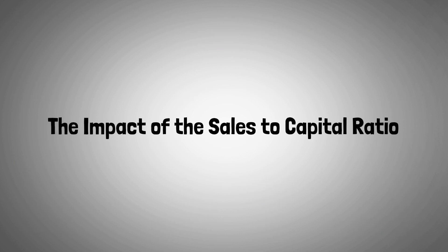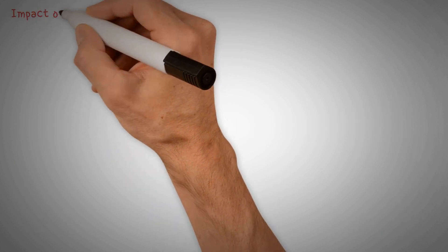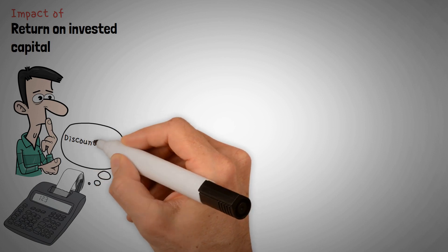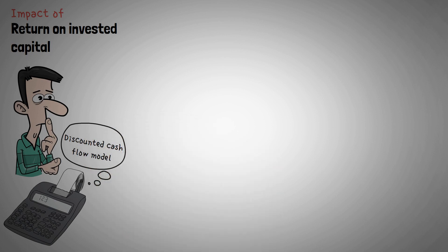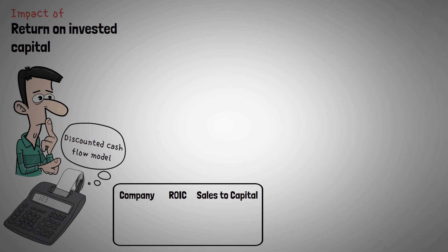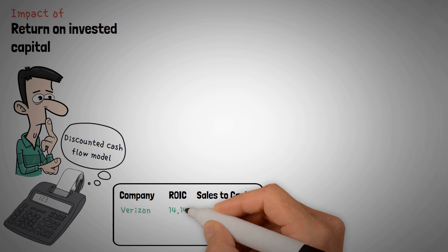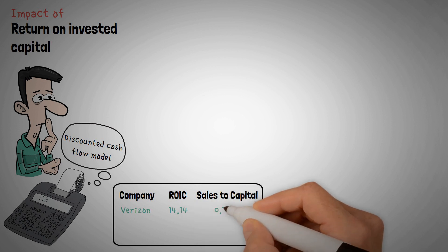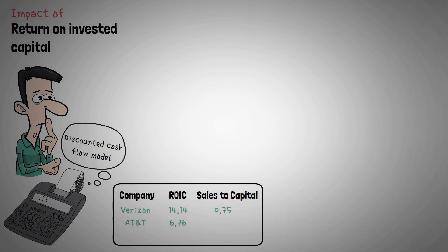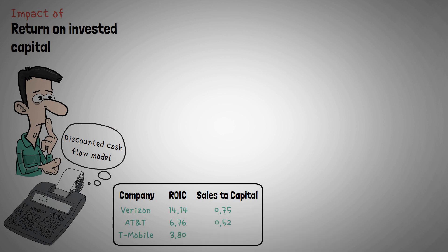To assess the impact of return on invested capital, we need to look at how it affects fair value calculations via a discounted cash flow model. Comparing the sales-to-capital ratio to the ROIC of these companies: Verizon, ROIC 14.14%, sales-to-capital 0.75. AT&T, ROIC 6.76%, sales-to-capital 0.52. T-Mobile, ROIC 3.80%, sales-to-capital 0.45.